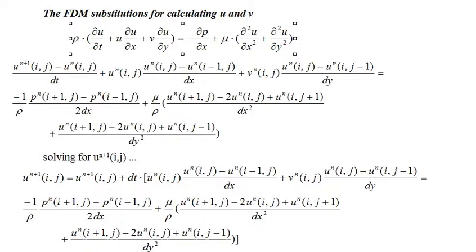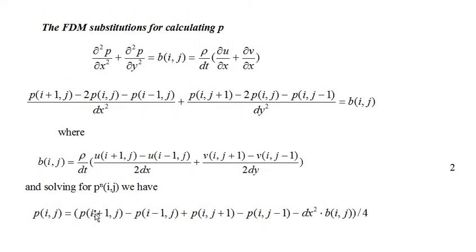Now we're ready to make the FDM substitutions and compute. First we have the FDM substitutions for the momentum equations — the substitution for the x-momentum equation is shown. Moving everything but u_{n+1} to the right of the equal sign gives the computational equation shown at the bottom of the page. Next we have the FDM substitutions for the Poisson equation for fluid pressure. We'll solve the Poisson equation using Gauss-Seidel iteration. Note that the right-hand side is a constant during the iteration, so we can evaluate it beforehand and assign the values to an array b. The computational equation for p is shown at the bottom of the page.